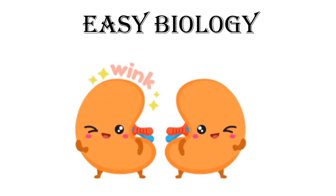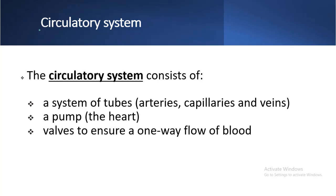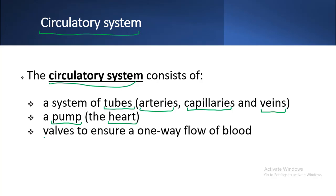Welcome to Easy Biology. Our next chapter is transport in animals, or transport in humans. In this chapter we discuss the circulatory system, which consists of tubes — arteries, capillaries, and veins — that carry blood. We also have a pump called the heart, and the circulatory system consists of valves that ensure blood always flows in one direction.